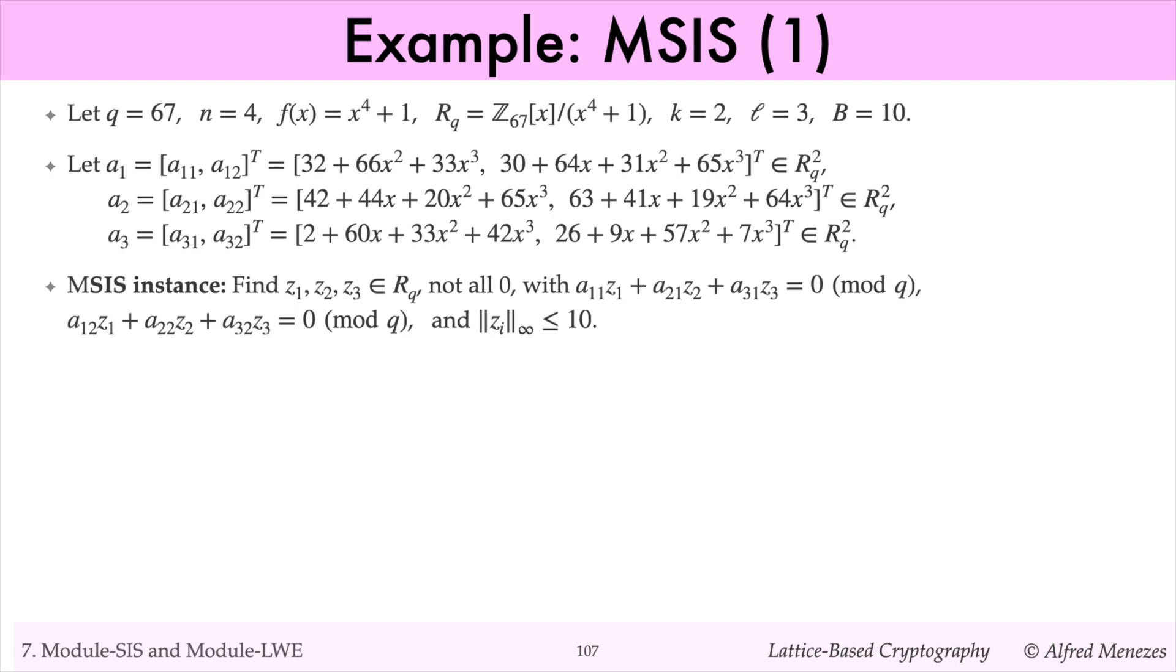So the module SIS problem asks us to find small polynomials z1, z2, and z3, not all zero, such that a11 times z1 plus a21 times z2 plus a31 times z3 equals 0 modulo 67. Here, small means that the coefficients are between minus 10 and 10.